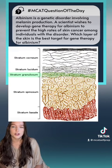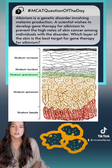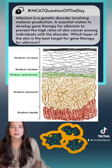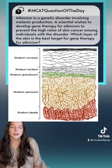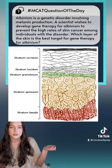The next layer, the stratum granulosum, is named because the keratinocytes in this layer have granules inside of them that move the keratin around — they are keratin-handling granules.